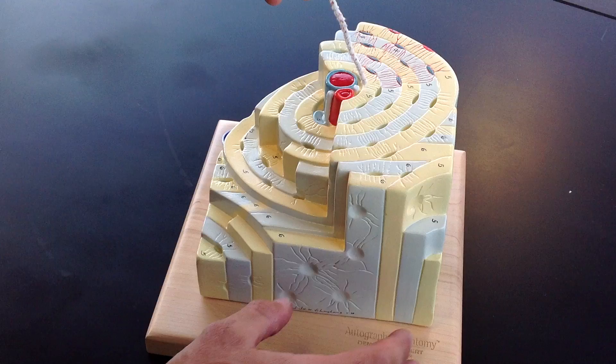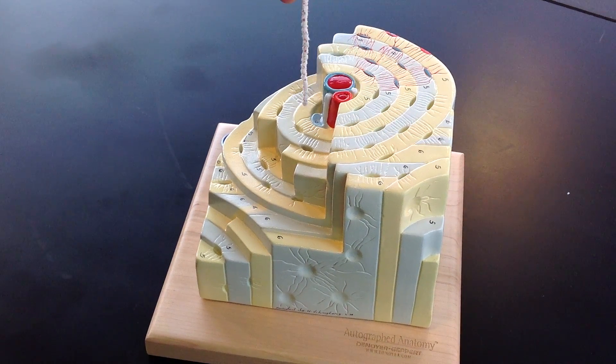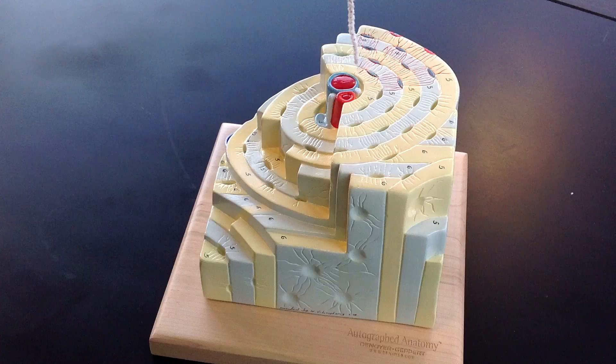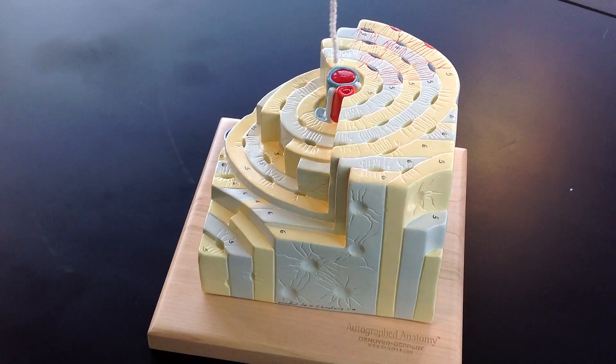First is going to be a central or Haversian canal which is going to contain these vessels and nerves in the center of the osteon.